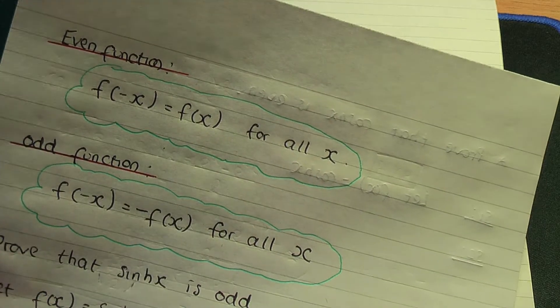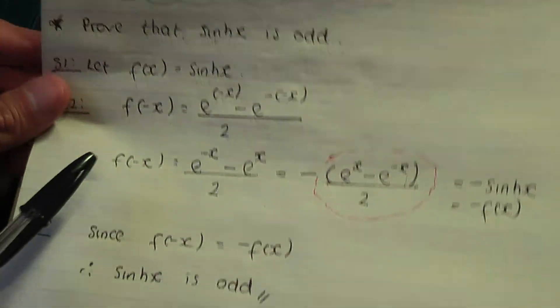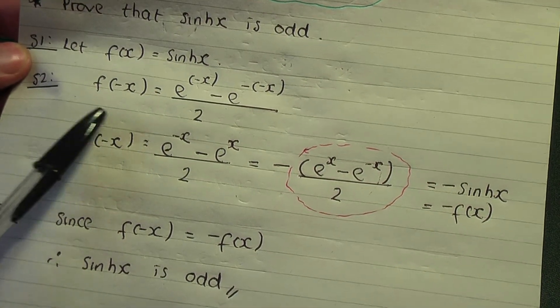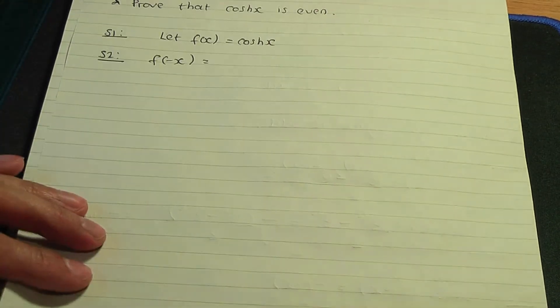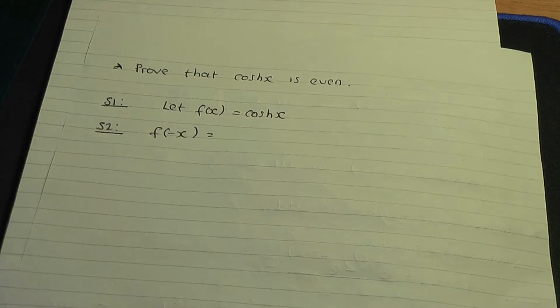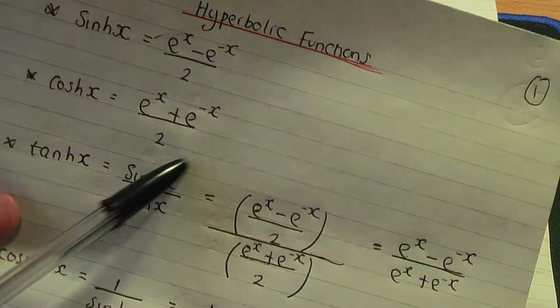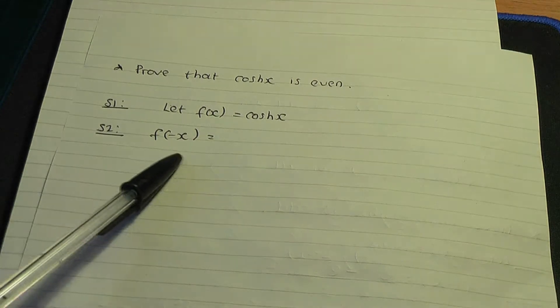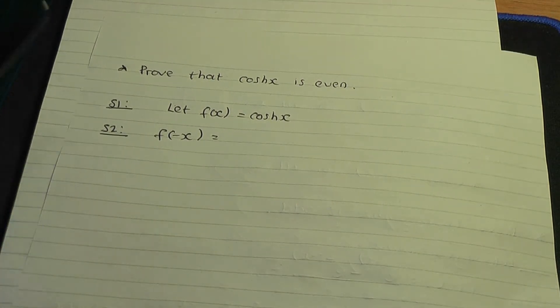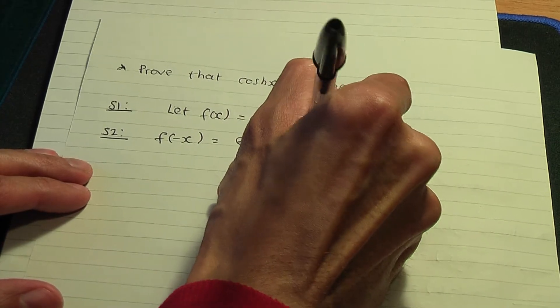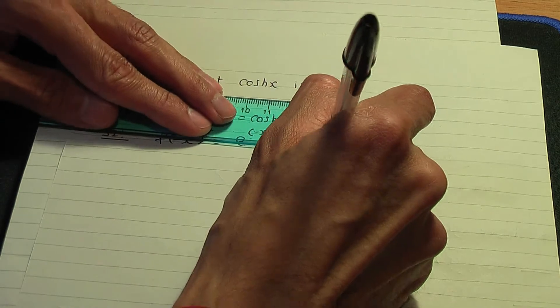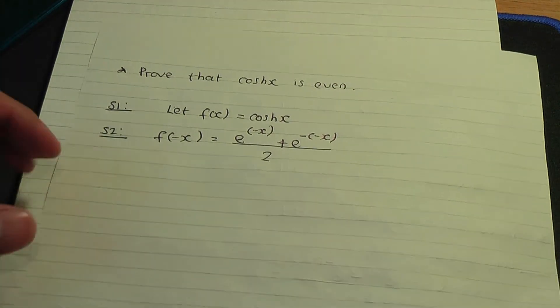As we've done in step number two for hyperbolic sine, let's start with f of minus x on the left-hand side and try to get f of x on the right. Using the definition: hyperbolic cosine is e to the x plus e to the minus x over two. To get f of minus x, replace all the x's by minus x, giving e to the power minus x plus e to the minus of minus x, divided by two.